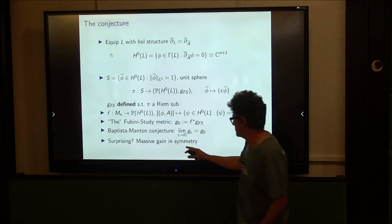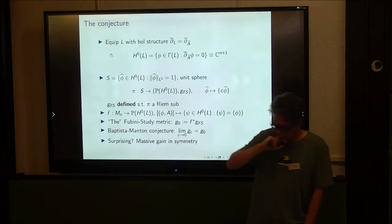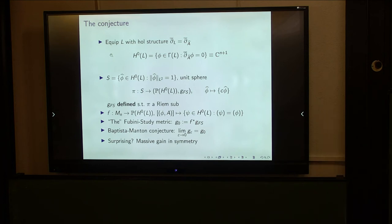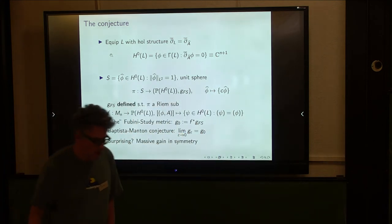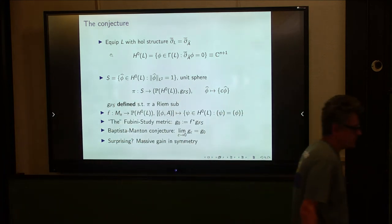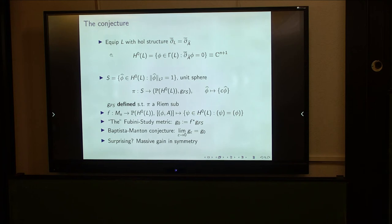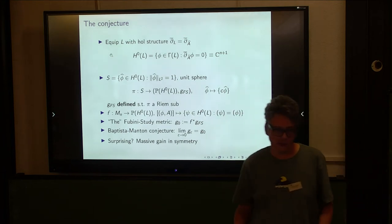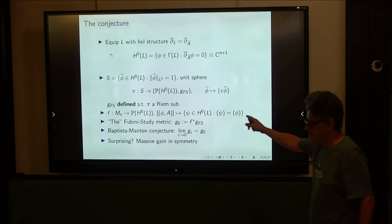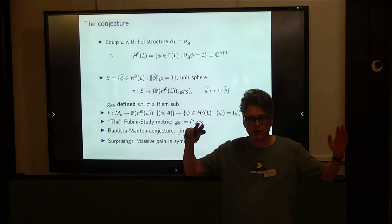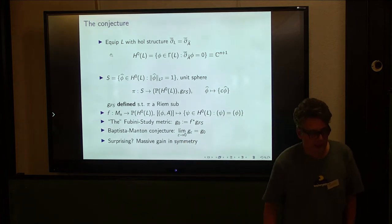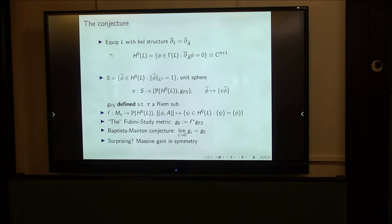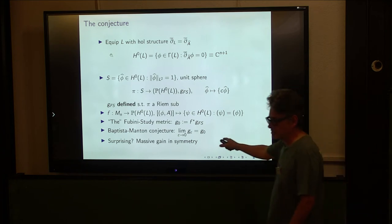There is a natural biholomorphism from the vortex moduli space to this projective space: a vortex (uniquely determined by its divisor D) maps to the line in the holomorphic sections space consisting of sections with that divisor. Pulling back the Fubini-Study metric along this biholomorphism gives us what we mean by the Fubini-Study metric G_0 on M_N. The Baptista-Mantel conjecture states that as epsilon tends to zero, G_epsilon converges to G_0. This is rather surprising, because the original sphere was not assumed to be round and generically has no non-trivial isometries, yet in this limit the metric converges to a highly symmetric space with constant holomorphic sectional curvature.